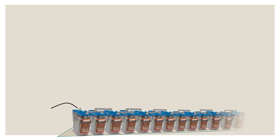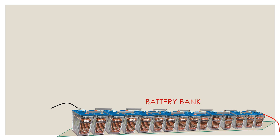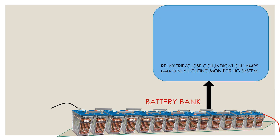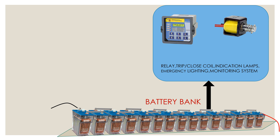In every substation, a battery bank is used to supply uninterrupted power to external load circuits like relay, trip coil, close coil, indication lamps, emergency lighting, etc., when AC power supply at the substation is unavailable. So battery bank is a source of power supply on an emergency basis, and it is reliable also.